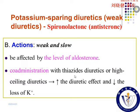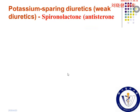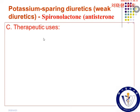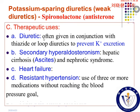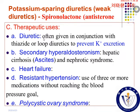So it helps to avoid hypokalemia caused by thiazide and loop diuretics. Because of its antagonism of aldosterone, this drug is much more useful compared with other potassium-sparing diuretics. Now look at the therapeutic uses. The first is its diuretic effect.